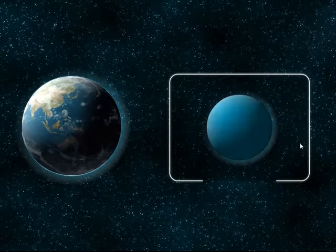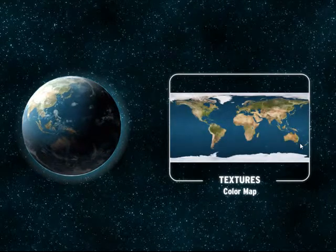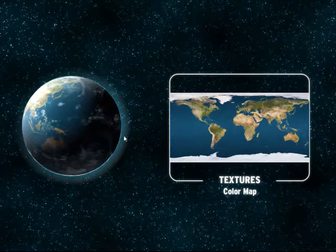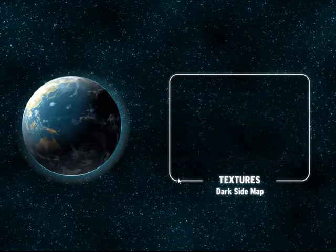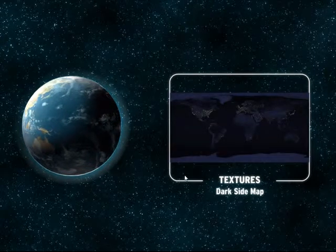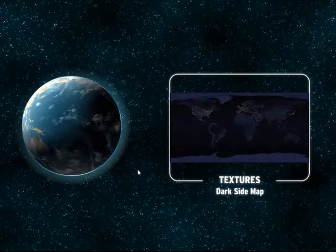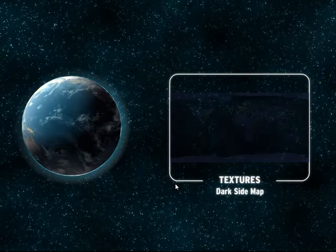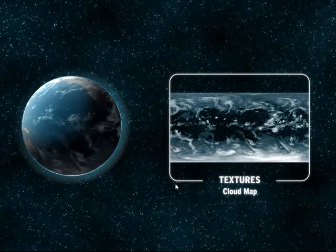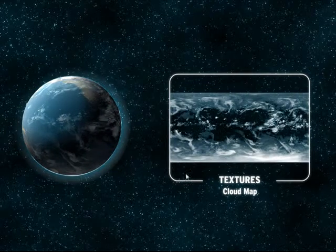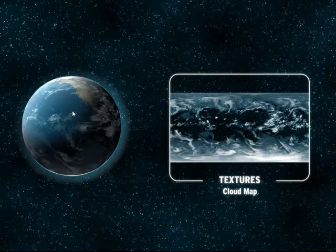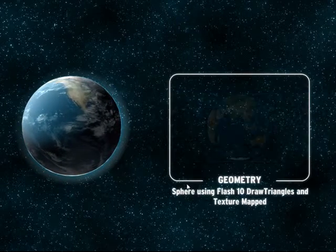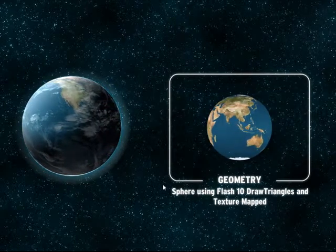We have textures: a color map, a dark side texture — which is basically the same as the light side except with lights on — and finally a cloud map, which we overlay on top and spin at a slightly faster rate.